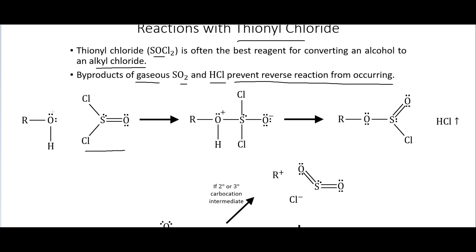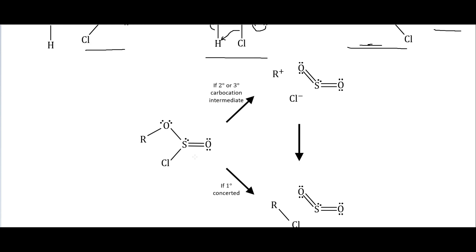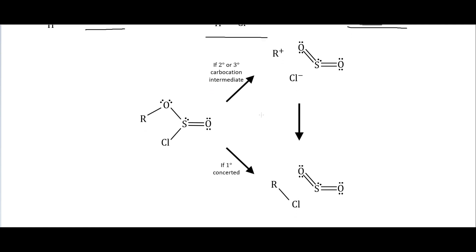The mechanism: the alcohol attacks the thionyl chloride sulfur, the electrons move onto the oxygen giving a leaving group, then the electrons move back down. The electrons grab the hydrogen and move back down again, giving us an intermediate. HCl leaves as a gas. We are then left with a chlorosulfite intermediate. For secondary or tertiary substrates, we can get a stable carbocation intermediate at this stage.